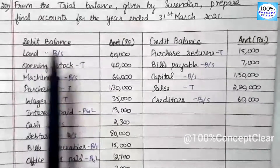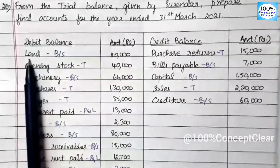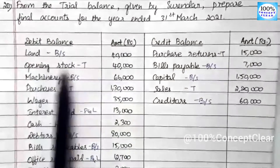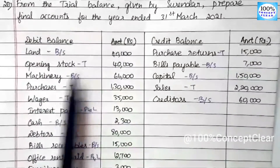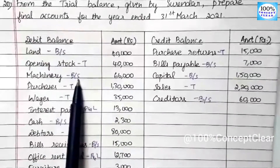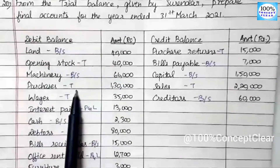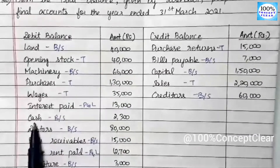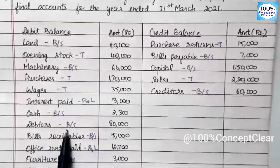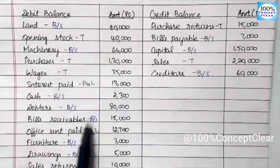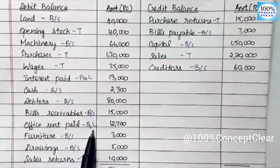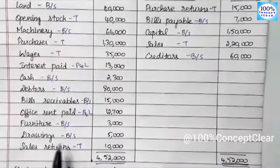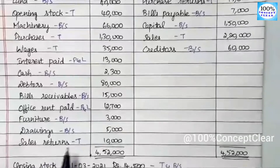Let's see how many accounts are in the debit side. In the debit side, the first item is land, which appears in the balance sheet. Next is opening stock — that goes to the trading account. Machinery is the balance sheet. Purchases and wages are the trading account. Interest is the P&L account. Cash, debtors, and bills receivable are the balance sheet. Office rent paid is the P&L account. Furniture and drawings are the balance sheet. Sales return is the trading account.